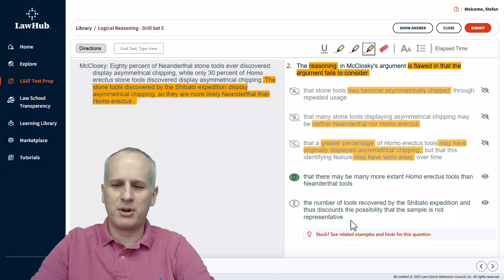The number of tools recovered by the Shibato expedition and thus discounts the possibility that the sample is not representative. Well, there is an issue of sampling, but it's not about the Shibato expedition specifically. It's about the total amount of Neanderthal stone tools that have been discovered versus the total amount of Homo erectus stone tools that have been discovered or are extant.